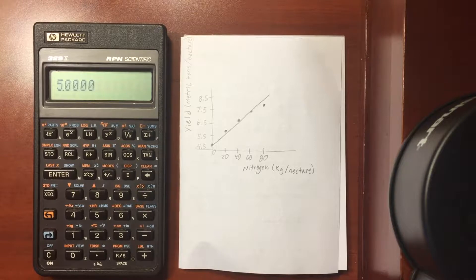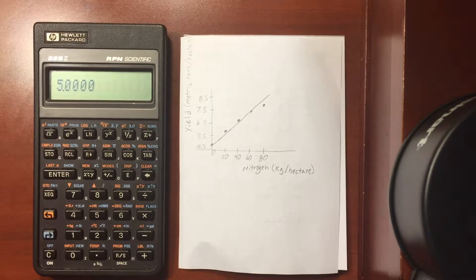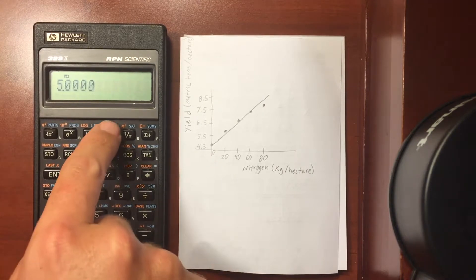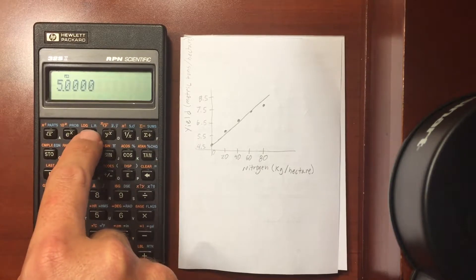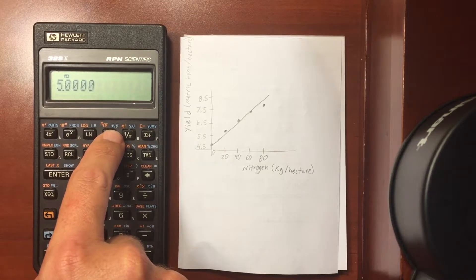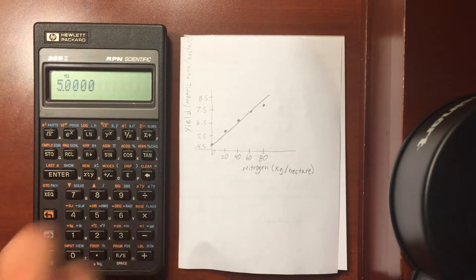So we have five numbers entered into that register and we can look at the statistics of this set that we've entered by going into these three menus here. Actually all four are here. So you have the linear regression, you have your means, your averages, you have your standard deviations, and your sums.